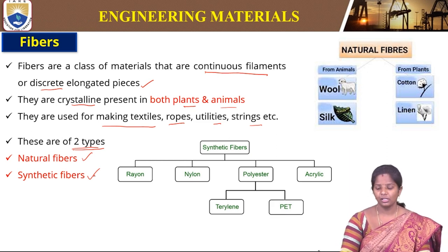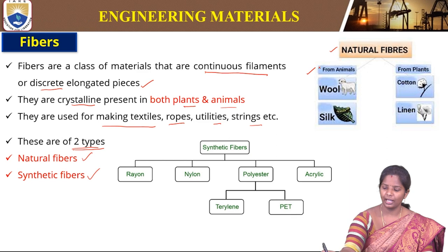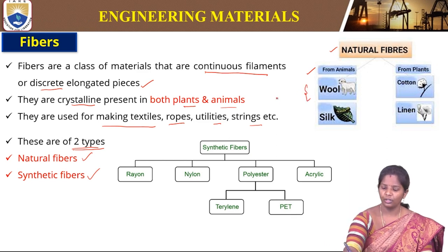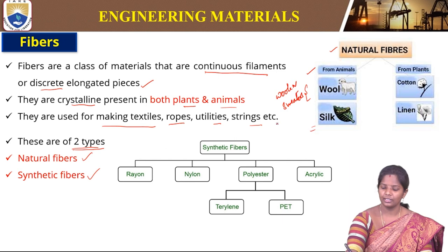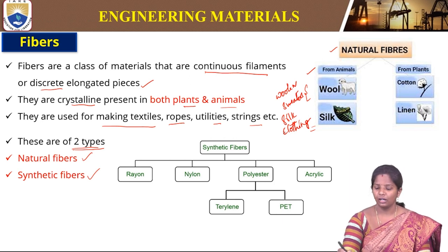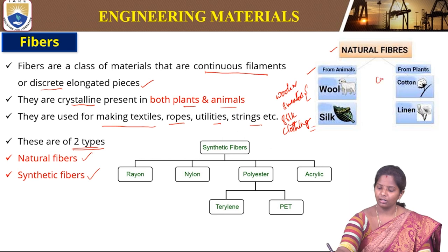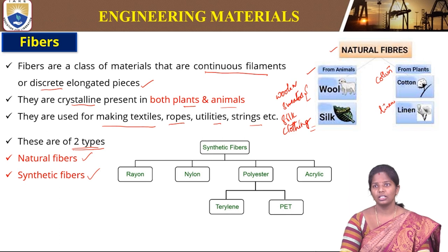Natural fibers are obtained from animals and plants. From animals, examples include wool — woolen clothing like sweaters — and silk. These are examples of animal-originated natural fibers. From plants, cotton and linen are also used in clothing material. These are good examples of natural fibers.